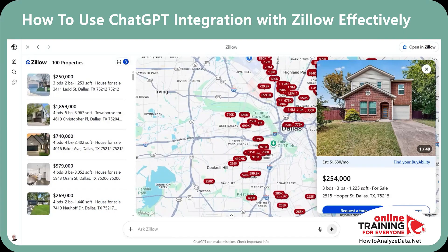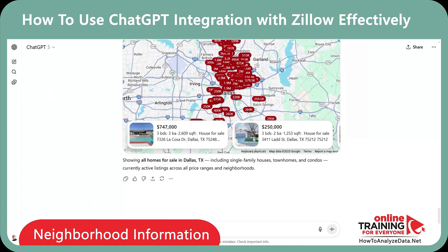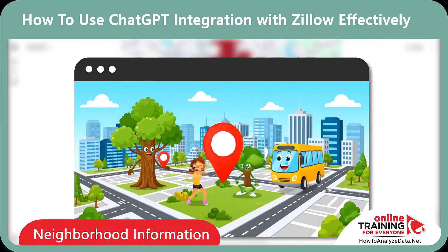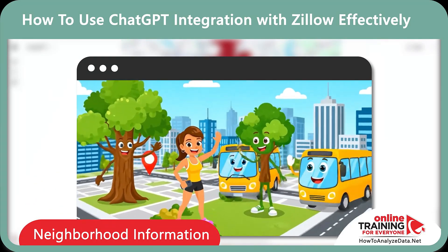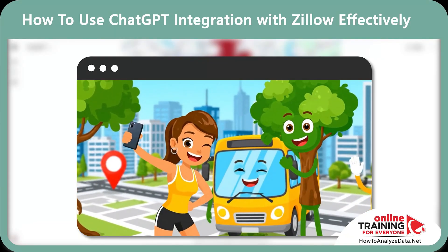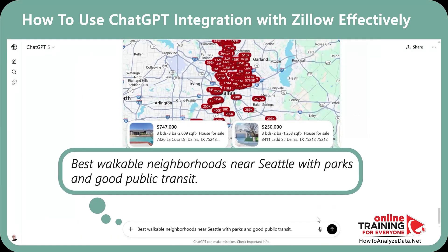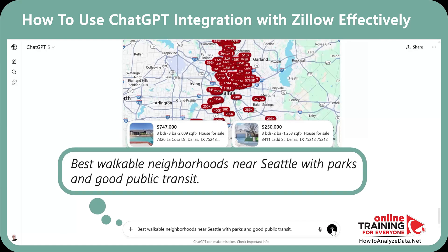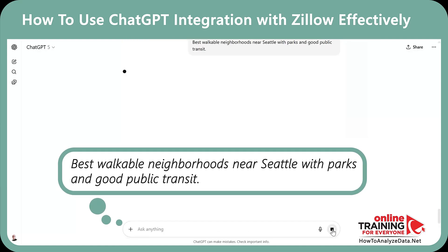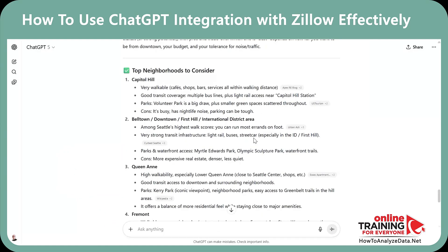Sometimes you don't search for a specific house, but you search based on the neighborhood. You might look at walkability, parks, and transit. Let me show you how to research areas using natural language. I'll request walkable Seattle neighborhoods near parks with good transit, and you get the full list in seconds.